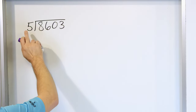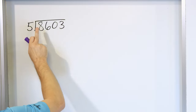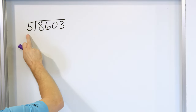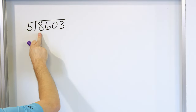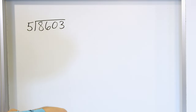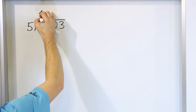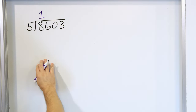Here it is an 8. 5 times 1 is 5, 5 times 2 is 10 — that's too large. So we back up and say 5 times 1 is 5.